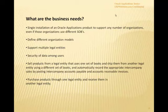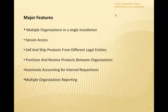You can also purchase products through one legal entity and receive them in another — for example, ordering from your corporate office and receiving at a field office. The major features summed up are: multiple organizations in a single installation, secure access, selling and shipping products from different legal entities, purchasing and receiving products between organizations, automatic accounting for internal requisitions, and multiple organizations reporting where you can run reports for different hierarchies defined in your organizational structure.